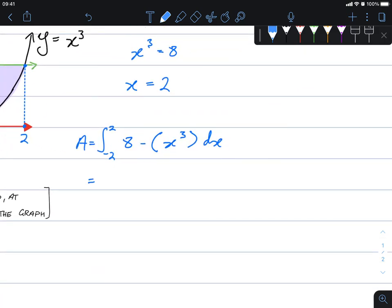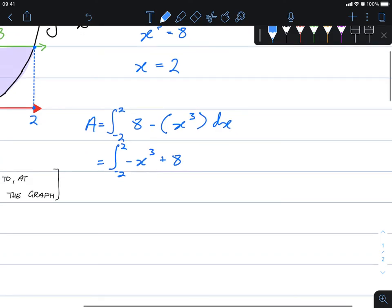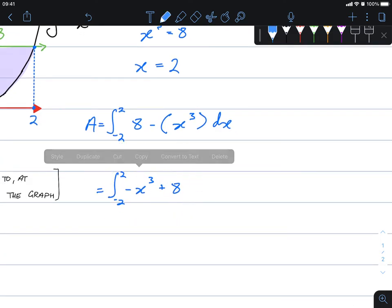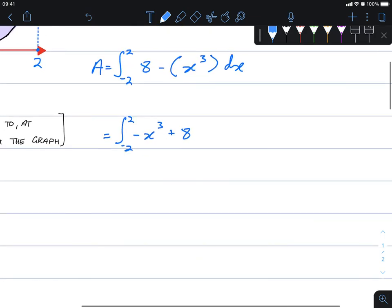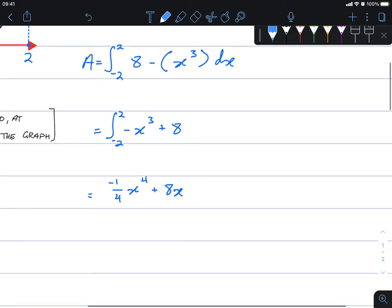So our integral is actually just going to be negative x cubed plus 8 from negative 2 to 2. It's nothing too difficult. So here we go. Increase the power by 1, divide by the new power, and not forgetting the current coefficient. Plus, for a constant 8, we just add an x to it, from negative 2 to 2.